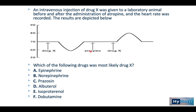So we know that acetylcholine at the SA node is the culprit — meaning we are blunting the baroreceptor reflex. Remember, the efferent limb of the baroreceptor reflex is acetylcholine at the sinoatrial node. So which of the following drugs is most likely drug X?